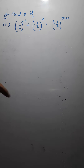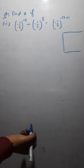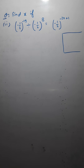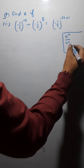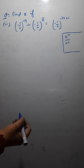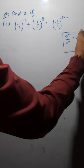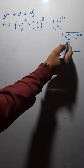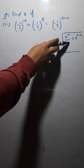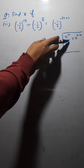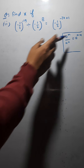Let me tell you one more rule. Write all these rules in your notebook. If a raised to the power m is to be divided by a raised to the power n, you can write it as a raised to the power m minus n. The denominator exponent is subtracted. Both have the same base but different exponents, so you subtract: m minus n.